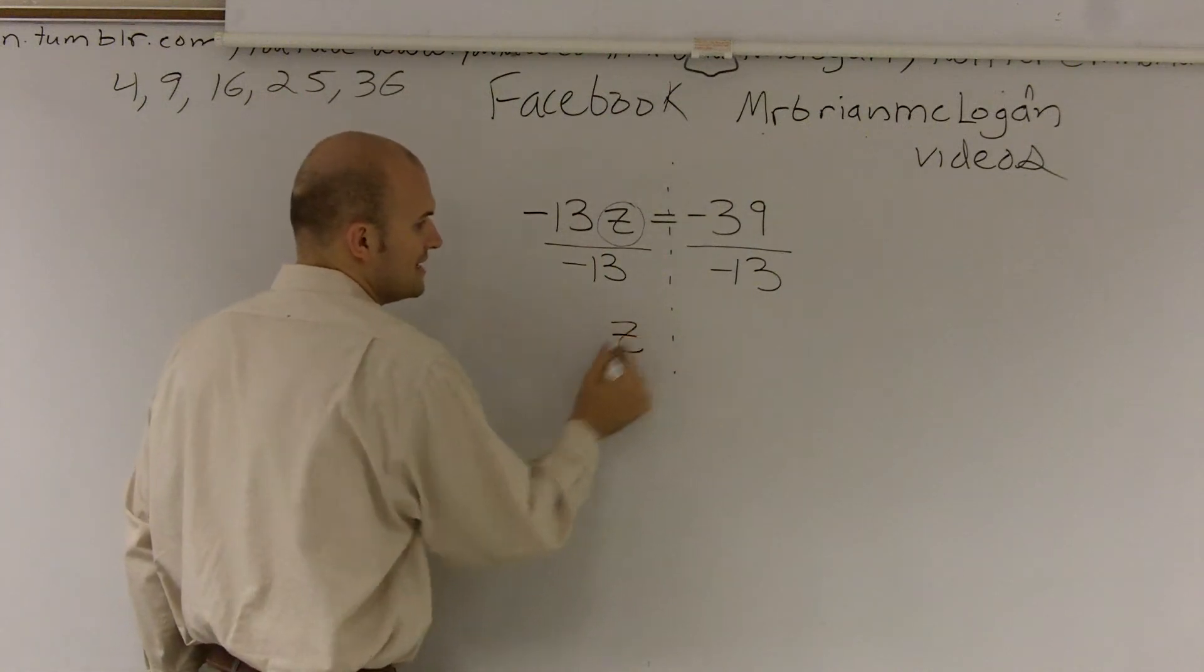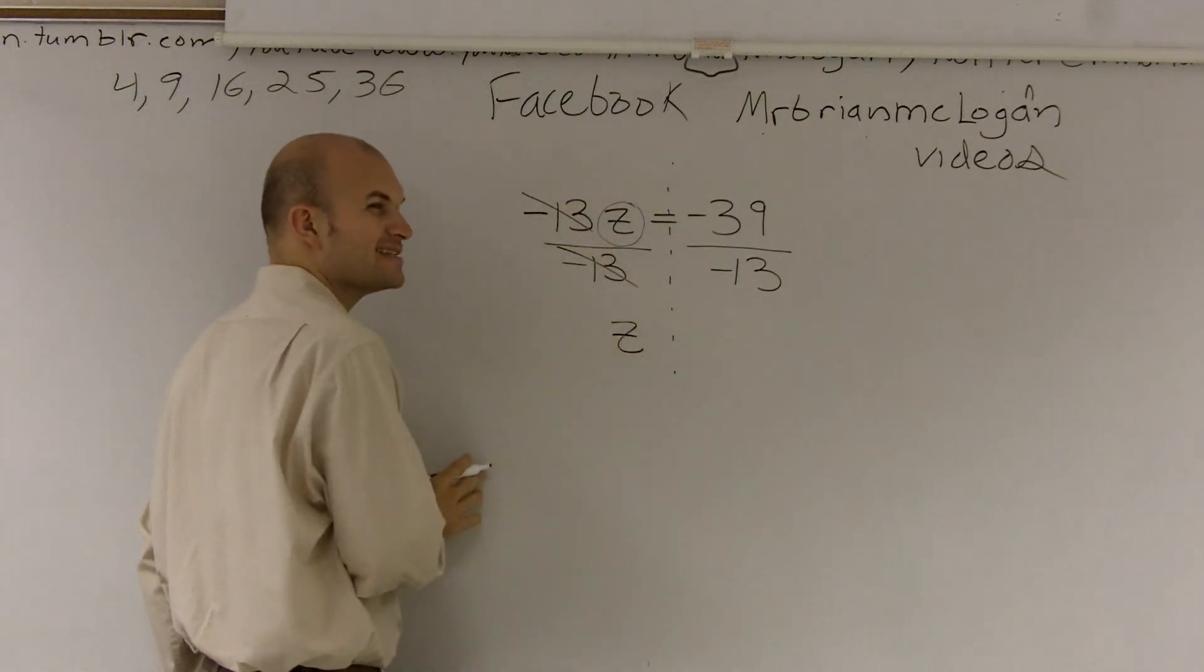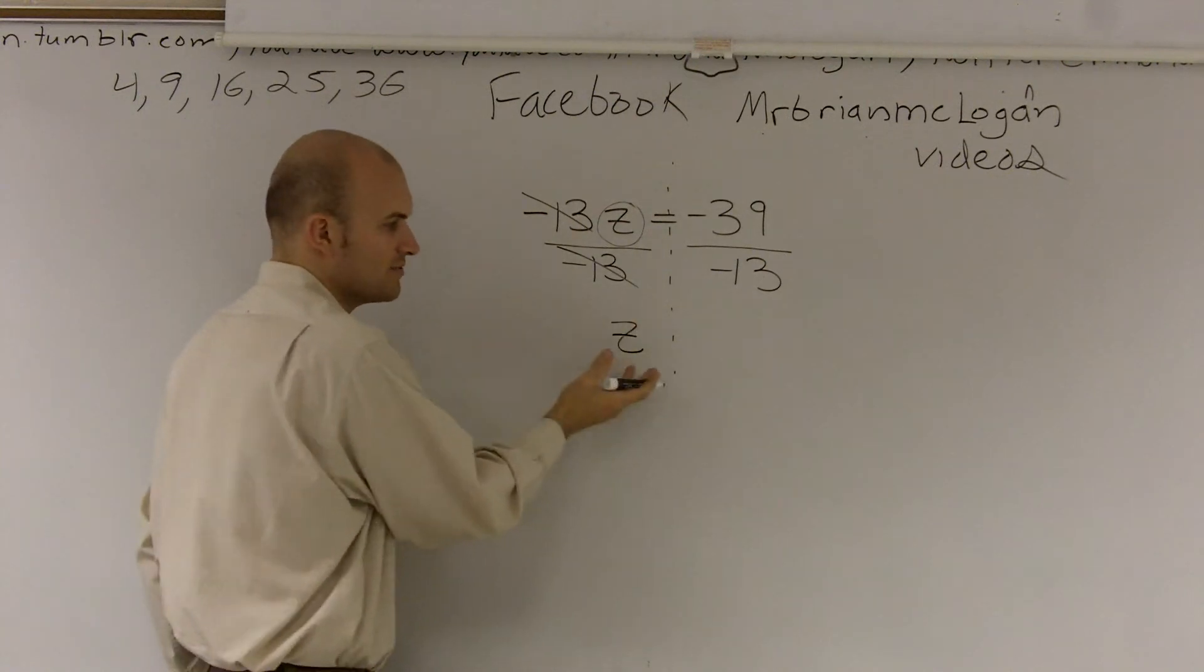And 1 multiplied by anything is going to give you that variable back again. So I'm going to be left with z, because those two, what we like to say, cancel out. They cancel out to 1, so we don't need to write it anymore.